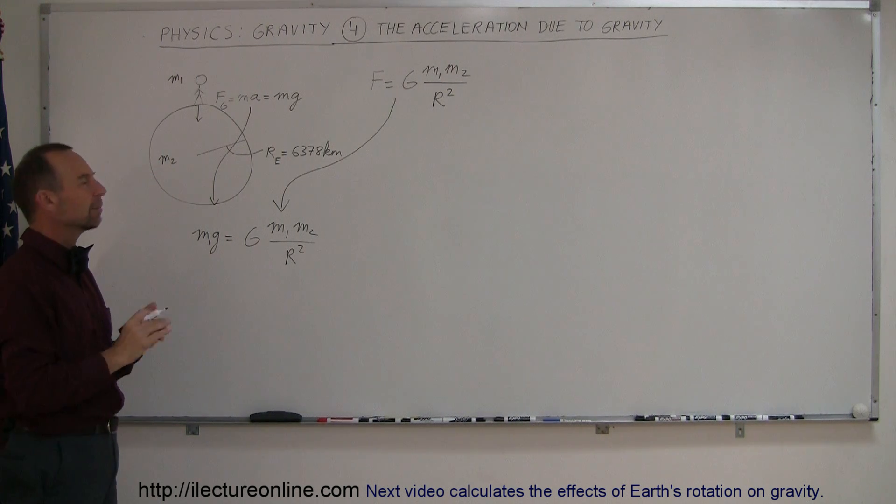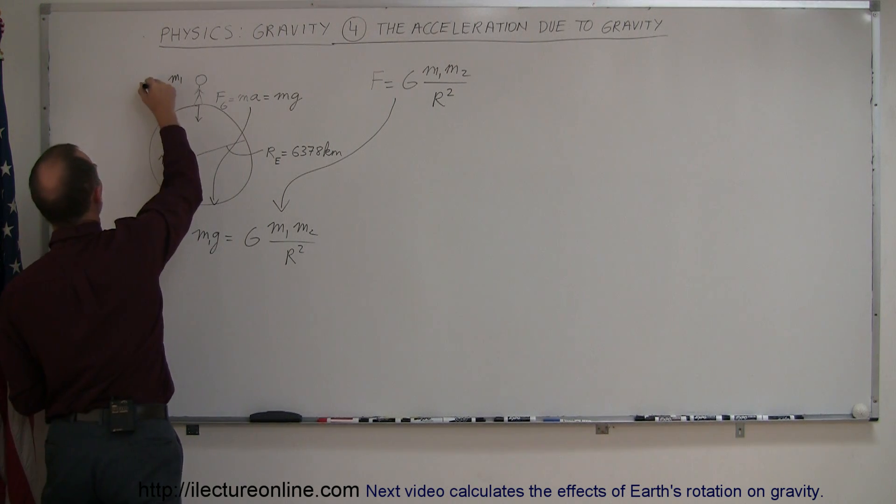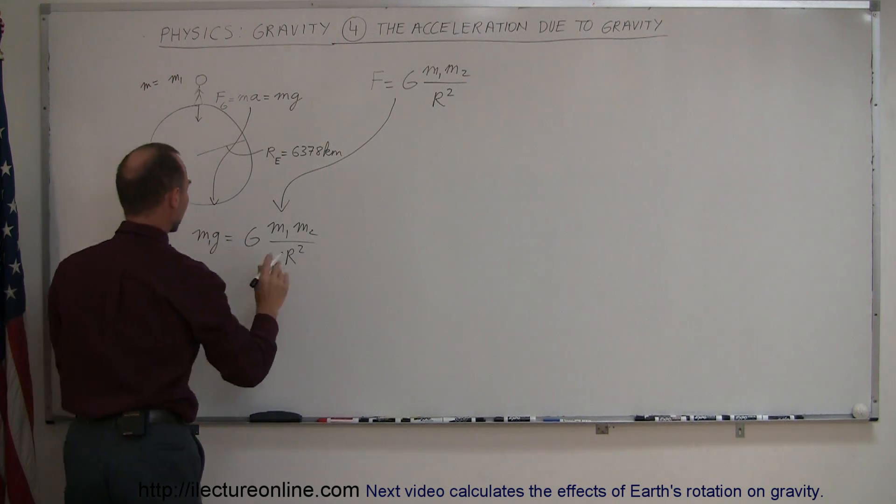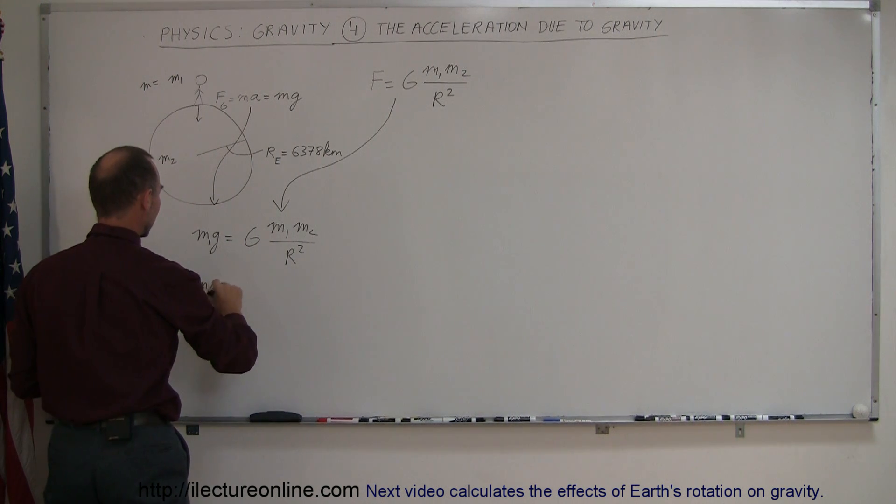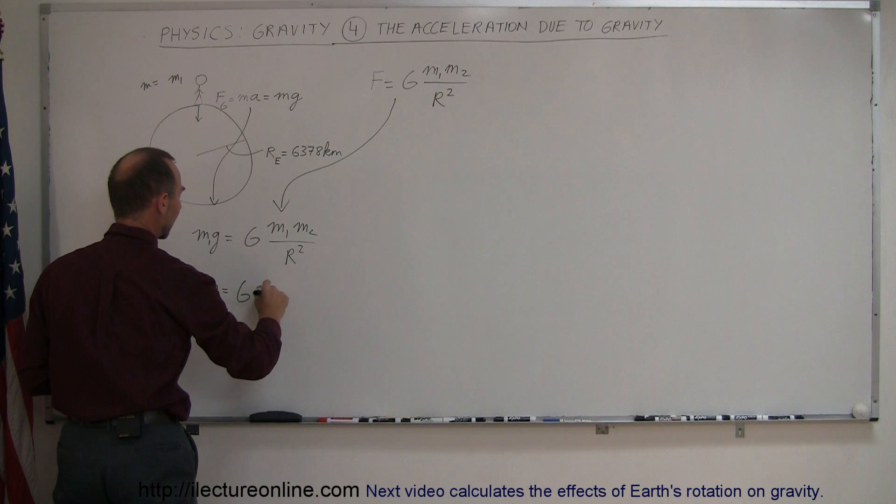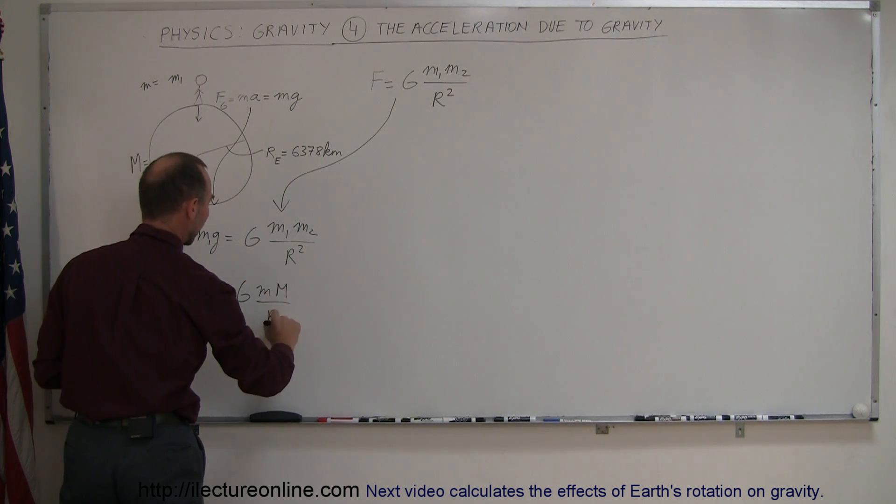Sometimes it's better to use small m and big M, so I'm going to call this small m and I'm going to call this big M. That sometimes makes it clearer, so little m times g is equal to G times little m times big M divided by r squared.